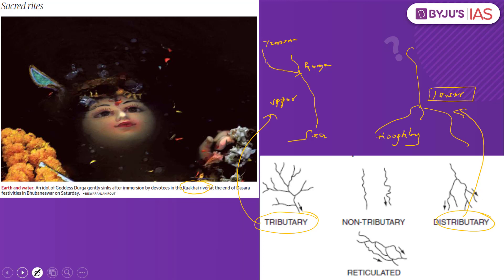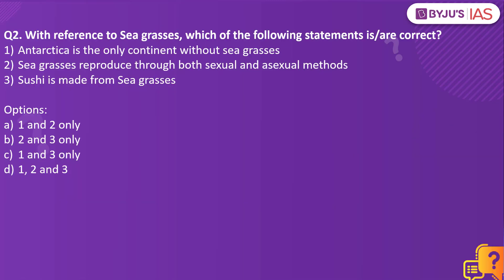Now let's look into the next practice question. With reference to seagrasses, which of the following statements is/are correct? Antarctica is the only continent without seagrasses. Seagrasses reproduce through both sexual and asexual methods. Sushi is made from seagrasses. The answer to this is 1 and 2 only.